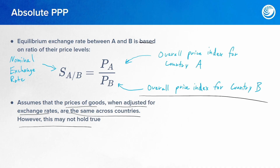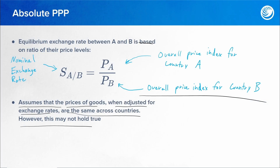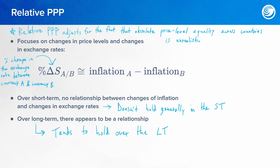Absolute PPP assumes that prices of goods when adjusted for exchange rates are the same across countries. However, this may not hold true. Things like transaction costs, trade barriers, and differences in goods and services can drive these differences. Anyone who has lived knows this is often not true — you may have gone on vacation or know people who have lived in other places and found that things are significantly cheaper or more expensive in certain countries. Things aren't always going to cost the same everywhere.